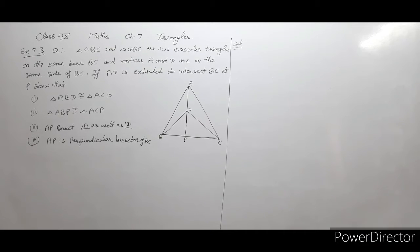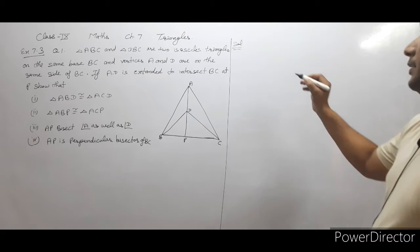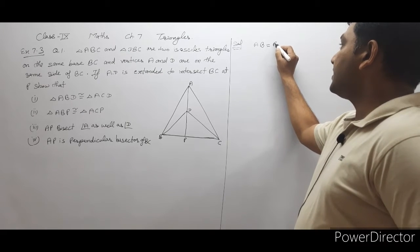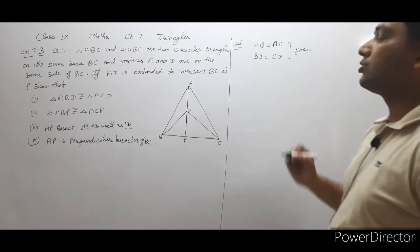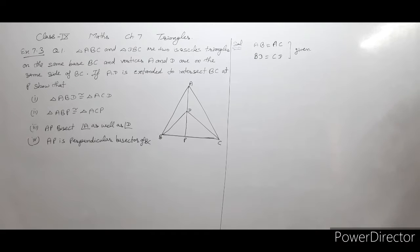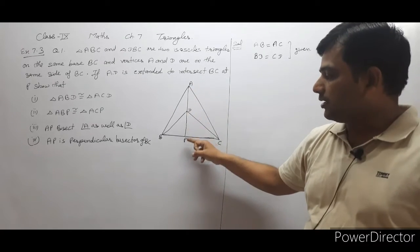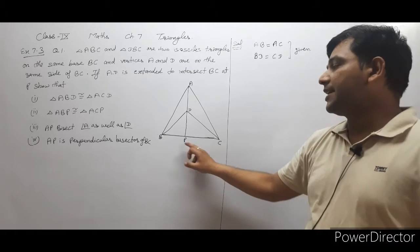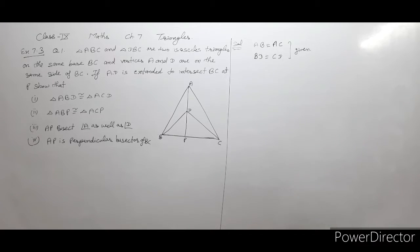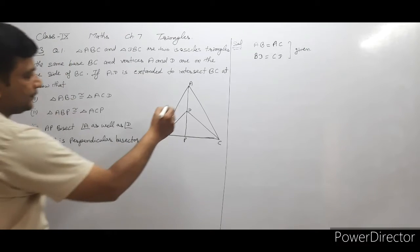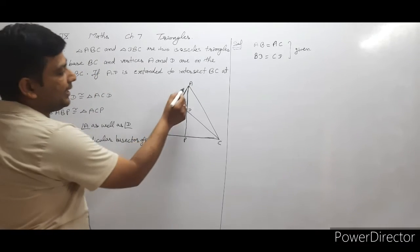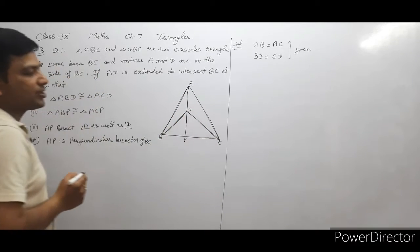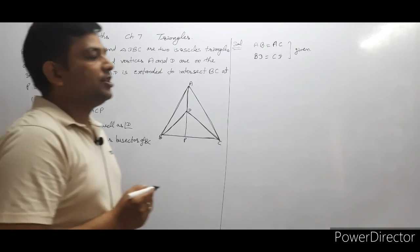Isosceles triangle means two sides are equal on the same base BC. AB equals AC and DB equals DC on the same base BC. If AD is extended to intersect BC at point P, we have to show: first, that triangle ABD is congruent to triangle ACD.